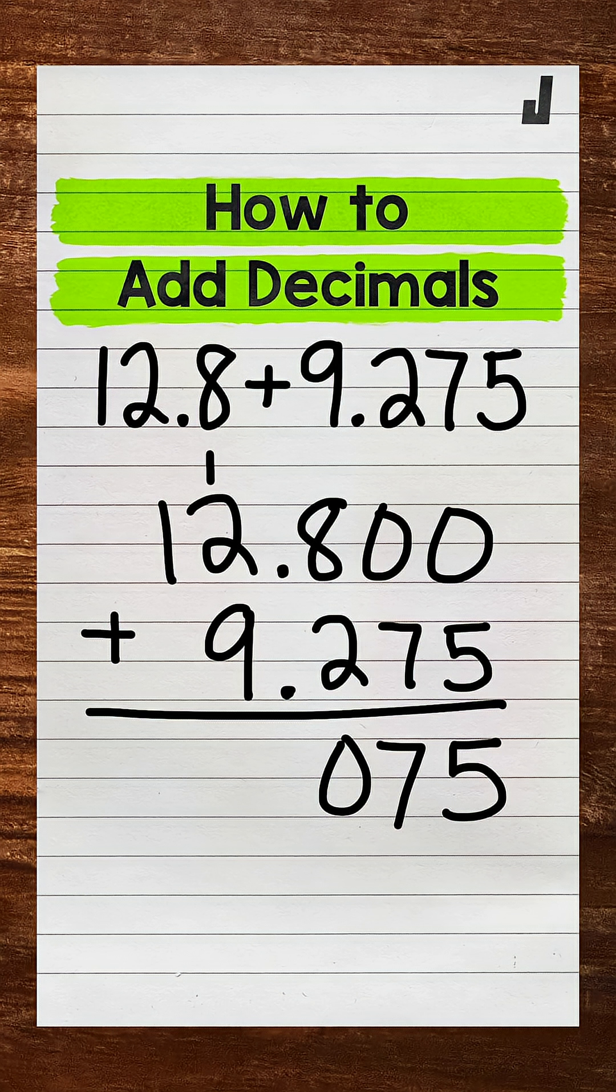Then after the tenths place we have the decimal. So we can bring that decimal straight down into our answer. Now we have one plus two is three, plus nine is twelve. And then one plus one is two.